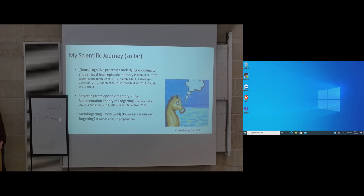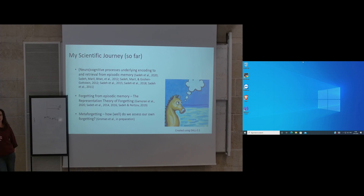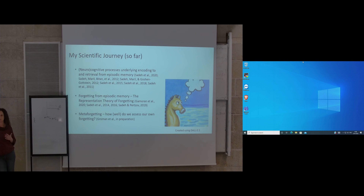Most recently, studying forgetting got me interested in what we know about our own forgetting — assessing our very own memory. We discovered an interesting bias: even when we don't forget much, we underestimate our memory following a delay and are less confident in it. This is what I call 'meta-forgetting.' That got me interested in what I'll talk about today: how we assess or evaluate other people's memories.